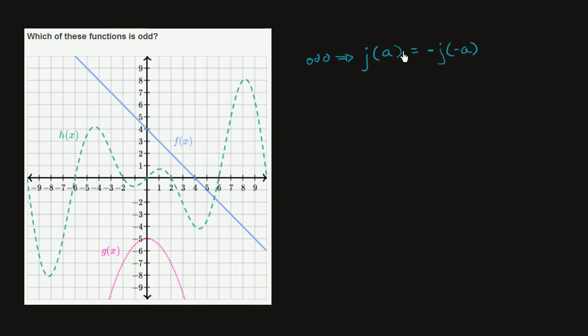then my function is odd. If these two things were the same, if you didn't have this negative here, then it would be an even function. So let's see which of these meet the criteria of being odd.